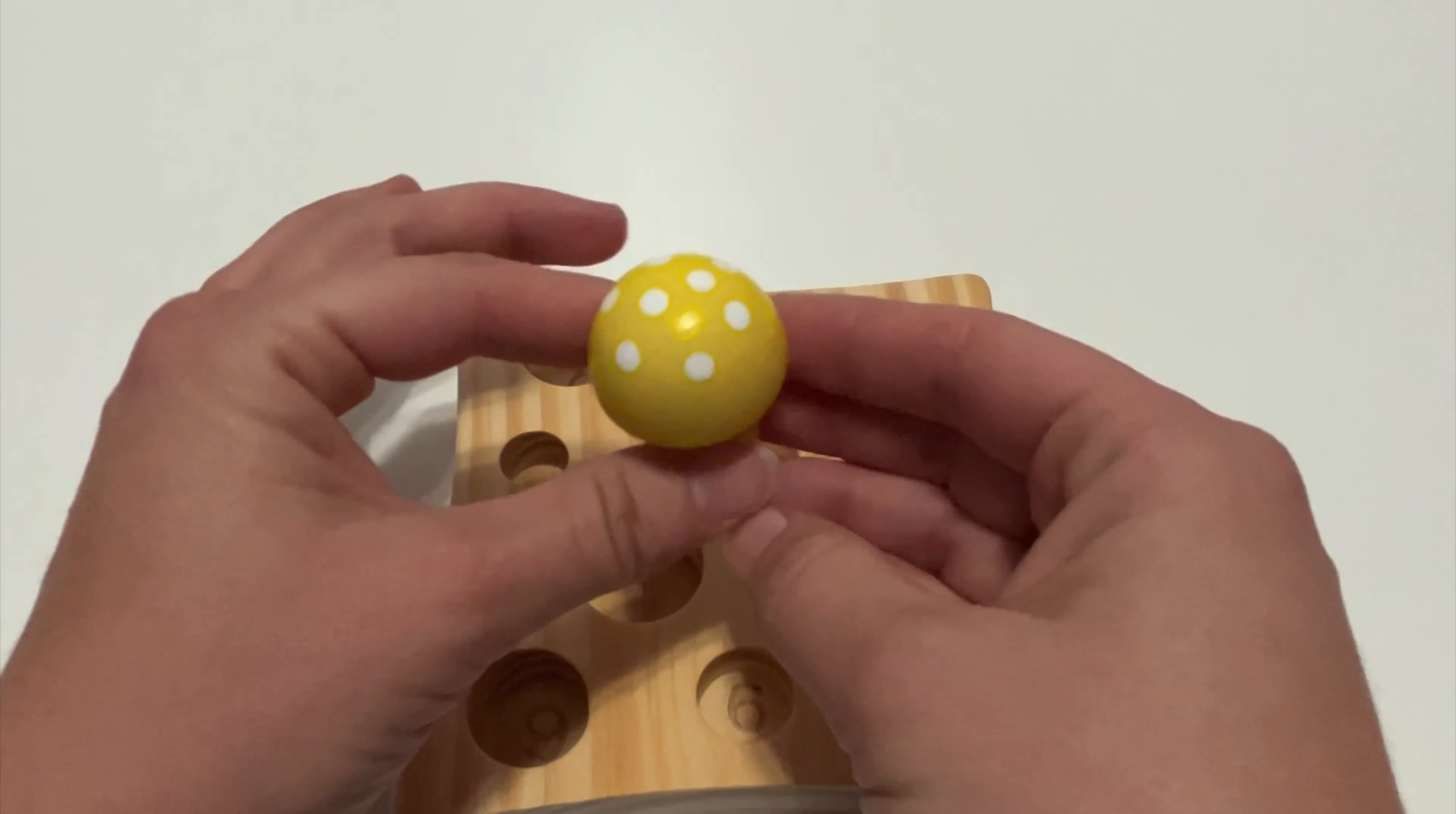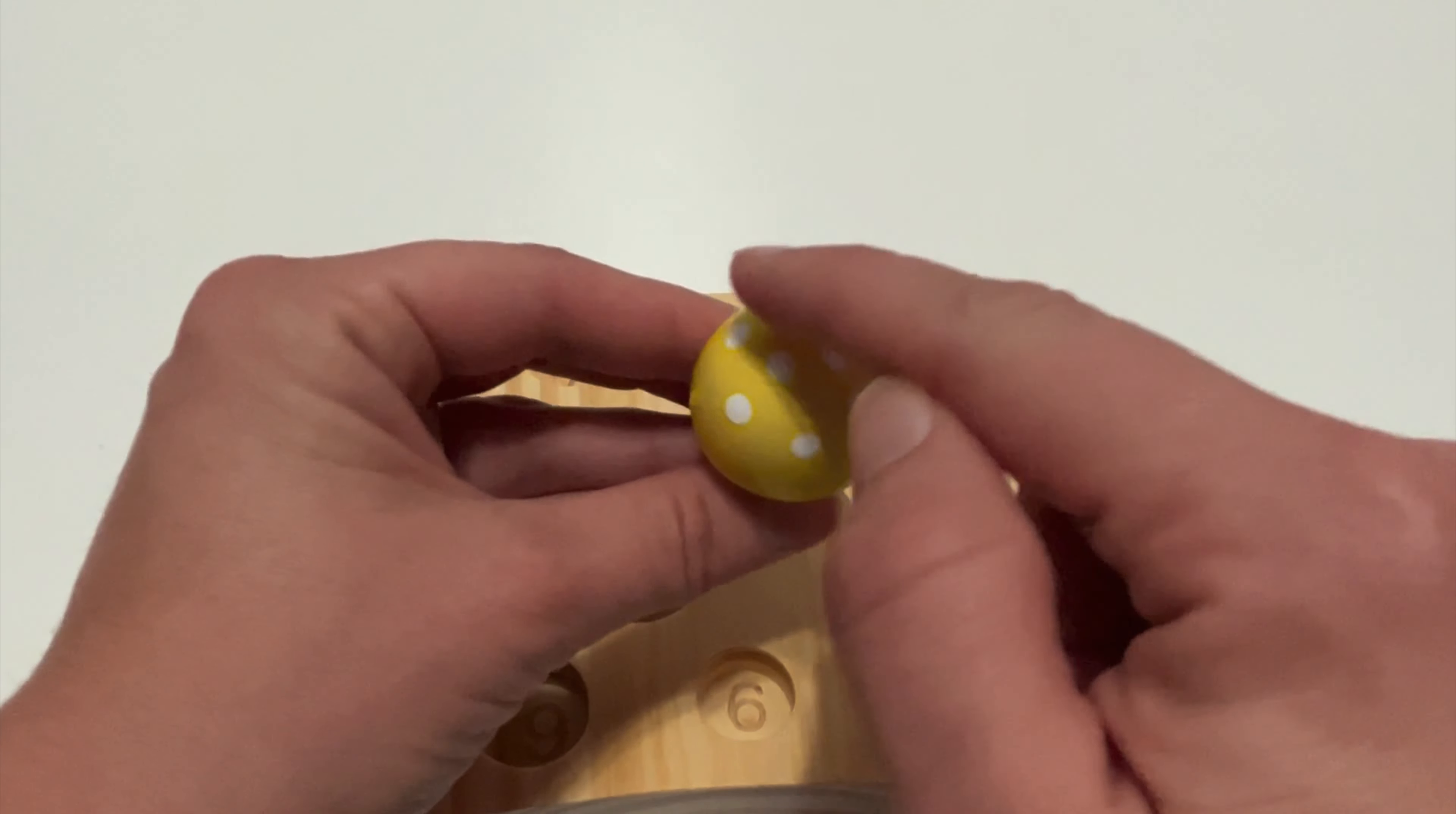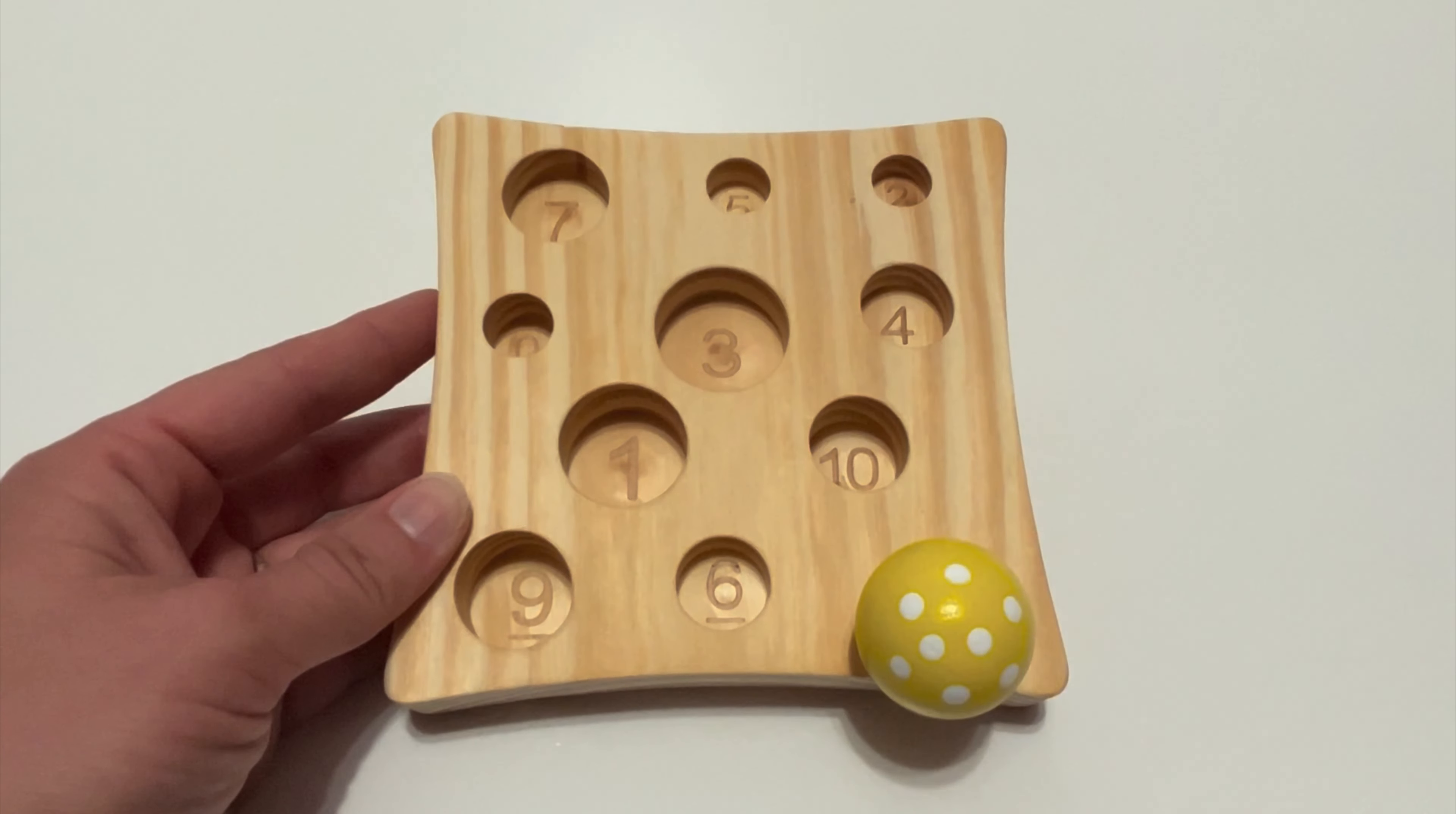Do you know what number comes after seven? Let's count and see. One, two, three, four, five, six, seven, eight. There are eight white circles. Where's number eight on our wooden peg? All right. Nice job.